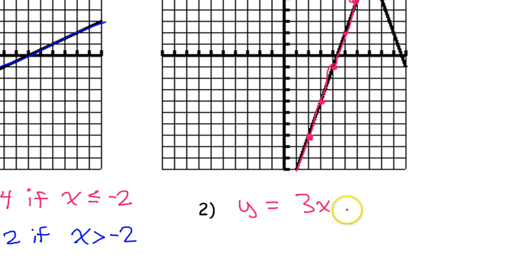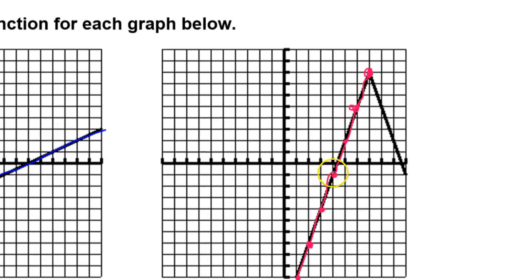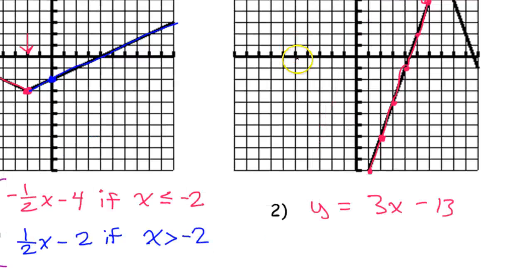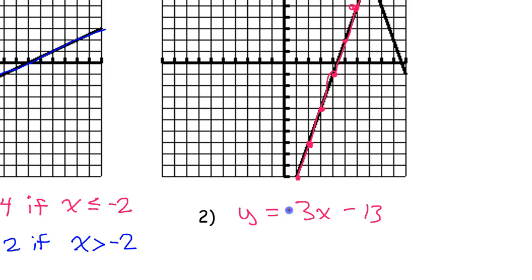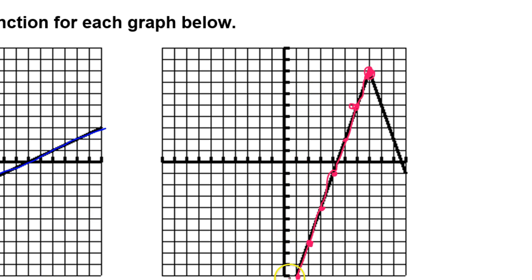The y-intercept is a little bit trickier because of the way it goes off the graph. I can figure out that if I go down 3 over 1 one more time, it'll hit the y-axis. Sometimes that's going to be really difficult because it won't be that close. When we do the right-hand branch, it would be really difficult to estimate where it hits the y-axis. So is there another way? Yes — we can use the vertex to find the y-intercept.